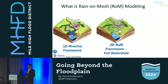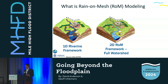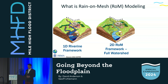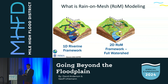The current 1D riverine framework — hopefully that animation is playing — shows all the red lines, which are essentially cross sections. For a 1D approach, you have to manually place all those cross sections to make sure you're capturing any change in slope along the stream profile as well as the geometry in the channel. It's a lot of manual effort, and each cross section is a computation point, so you get a flow, a depth, water surface elevation, and velocity at each one of those singular cross sections.